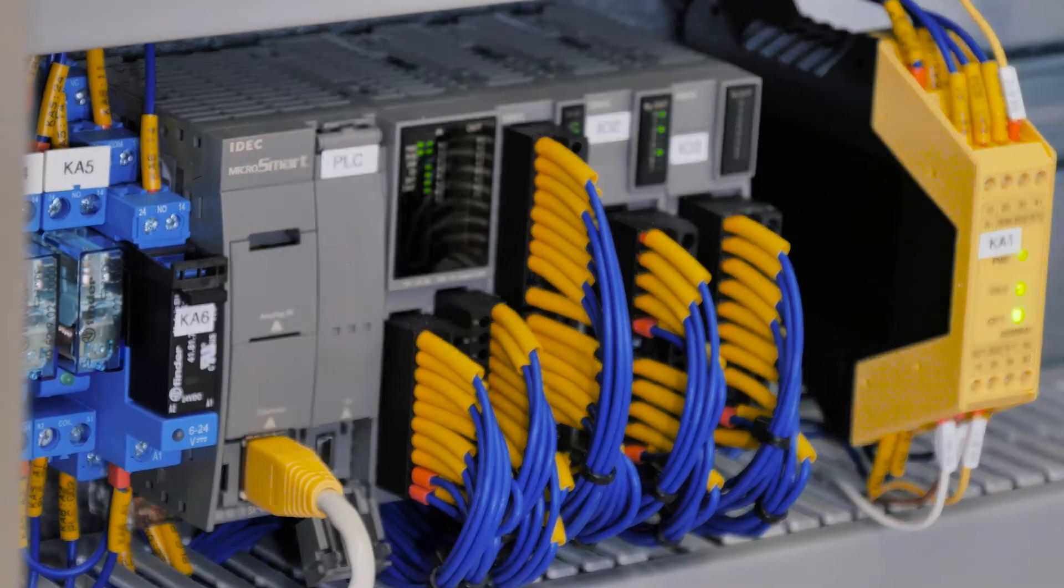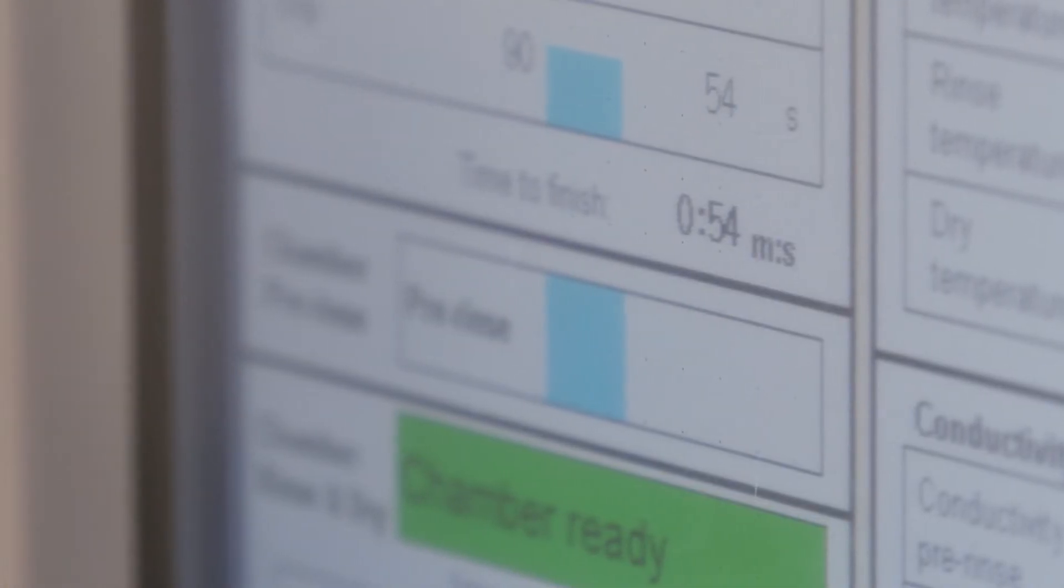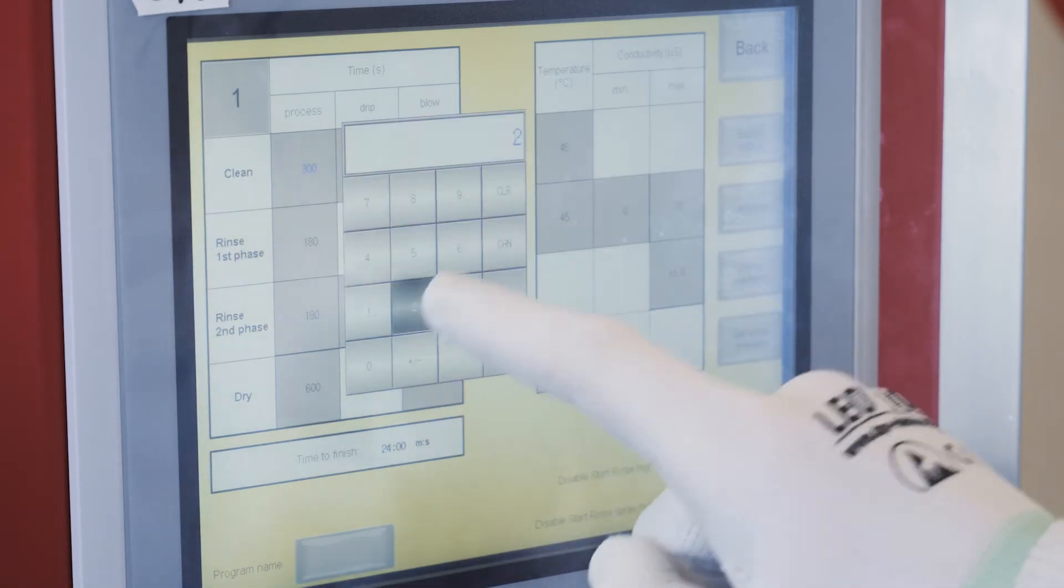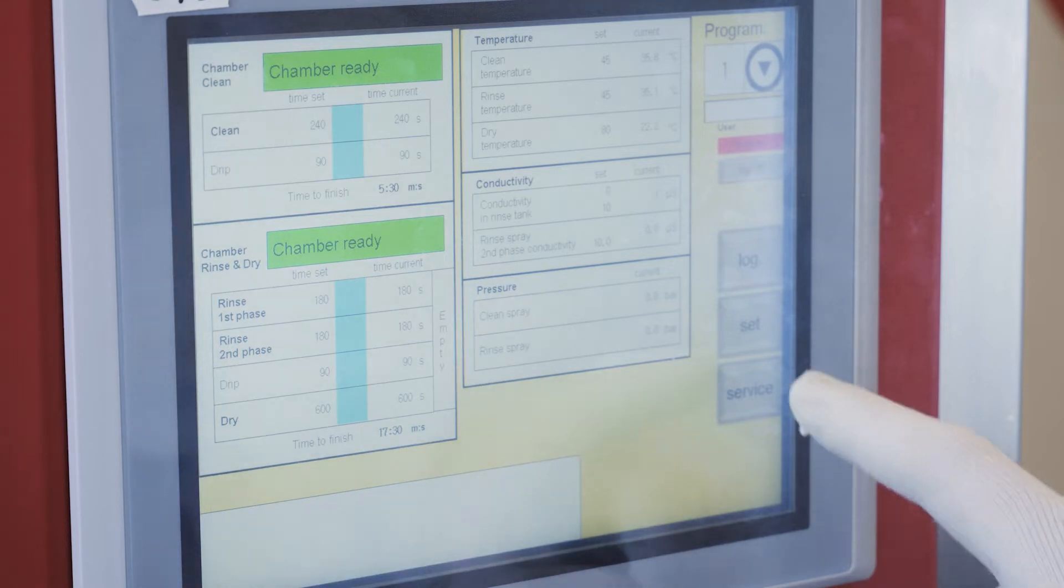The cleaning process is electronically monitored and controlled by the PLC. All the process parameters such as time, temperature and other variables can be quickly adjusted on the touch screen.